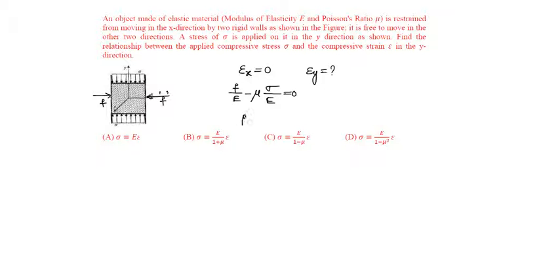From which f by E is equal to mu into sigma by E. E gets cancelled, f is equal to mu into sigma.